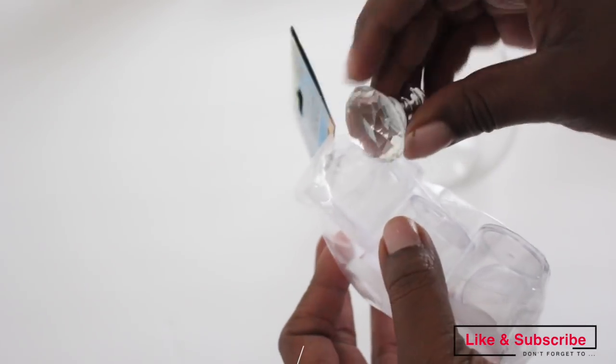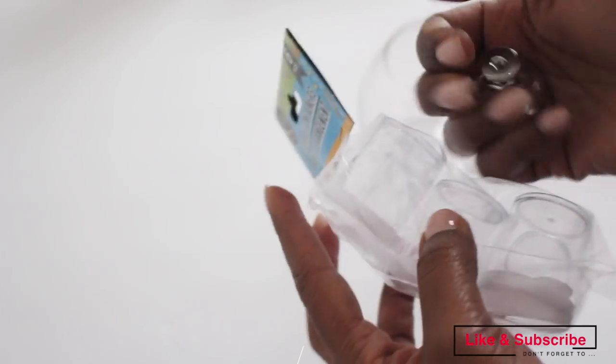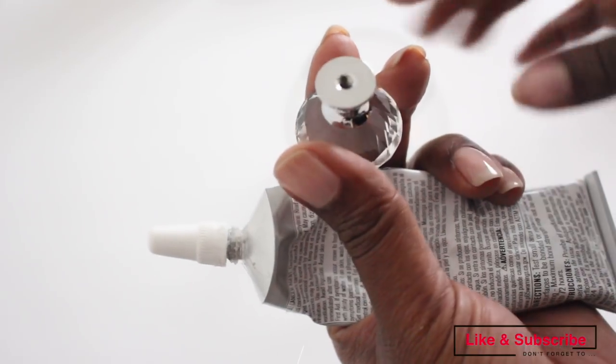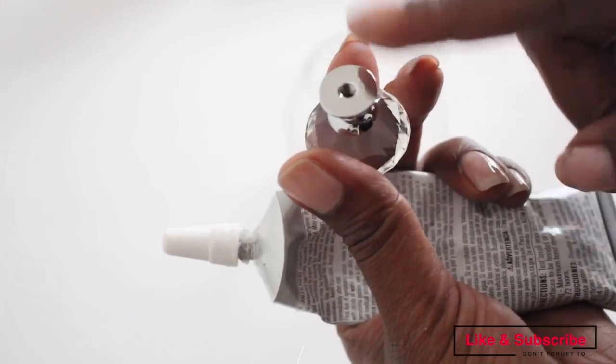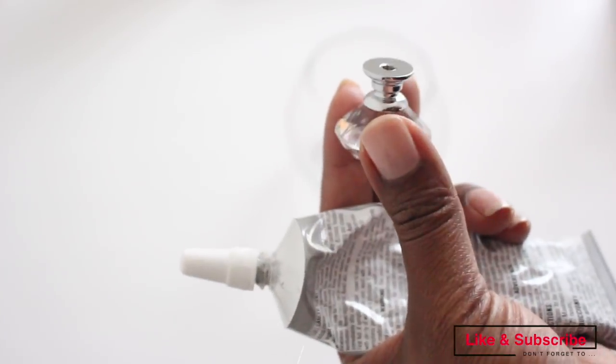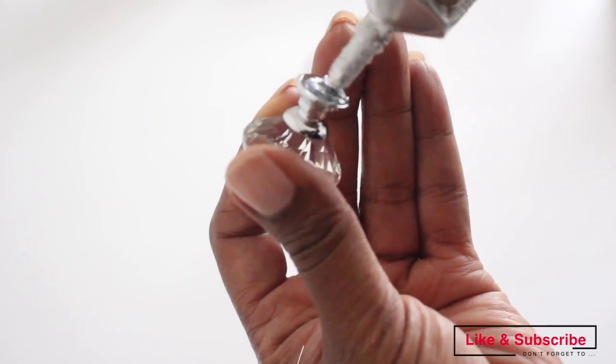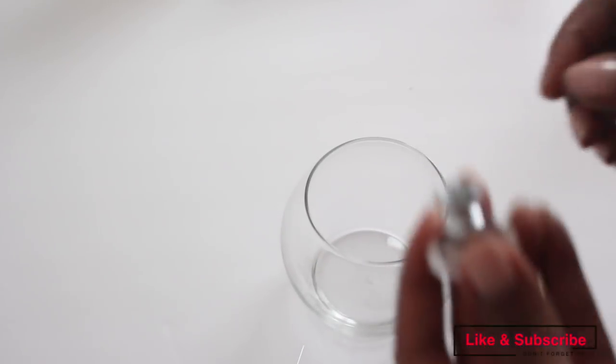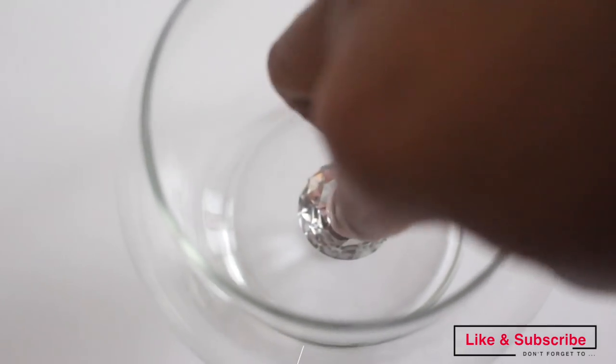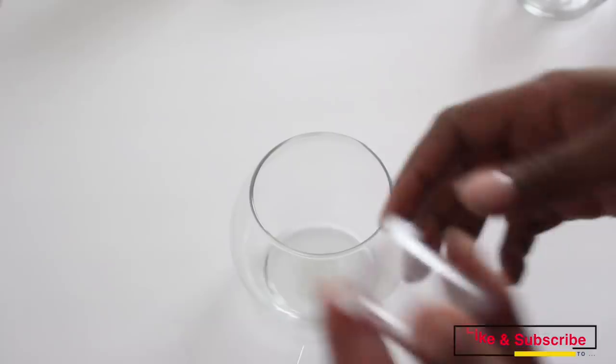If you want to stick with all Dollar Tree products, there are these storage containers that you can use instead. You wouldn't use the lid. The first thing I'm going to do is put a little bit of E6000 on the top of this knob, then place the knob in the center of the bowl and press down.